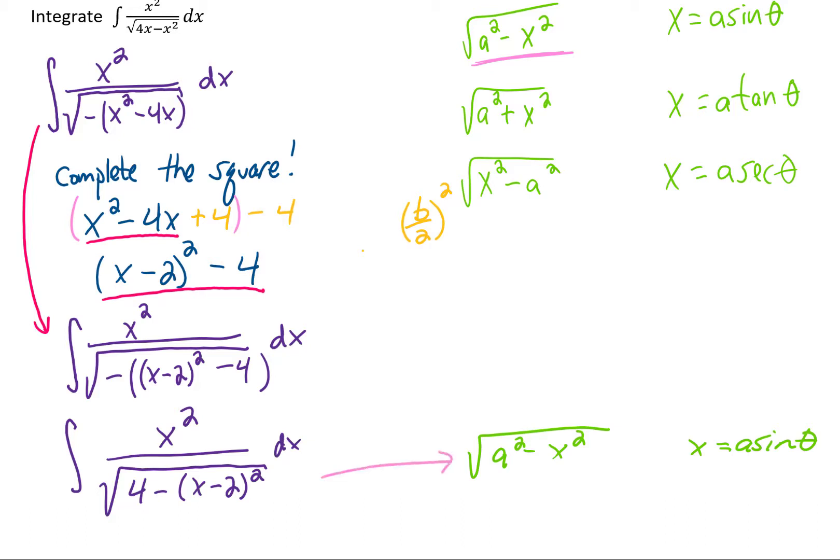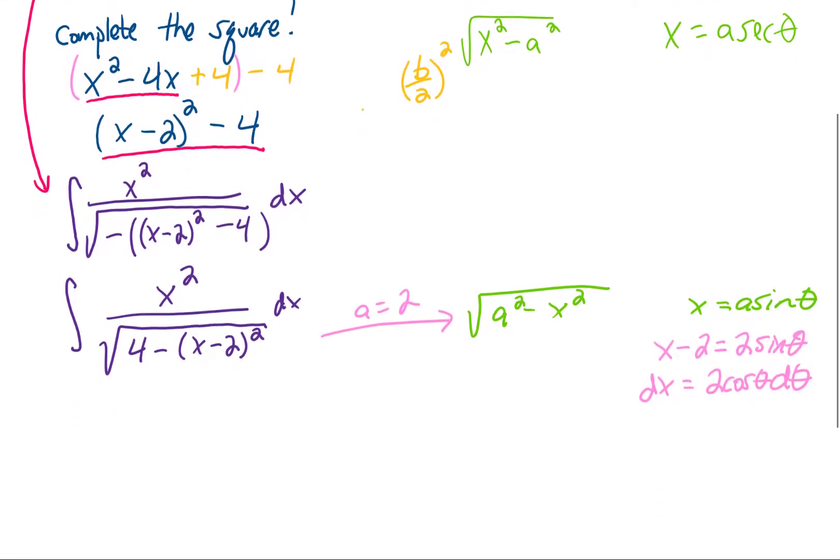All we've done is algebra so far, so let's use some calculus now. You'll notice that in this case, a equals 2, and instead of x, we have x minus 2 in our substitution. So we're going to use the substitution x minus 2 equals 2 sine of theta. We can take a derivative to get dx equals 2 cosine theta d theta.